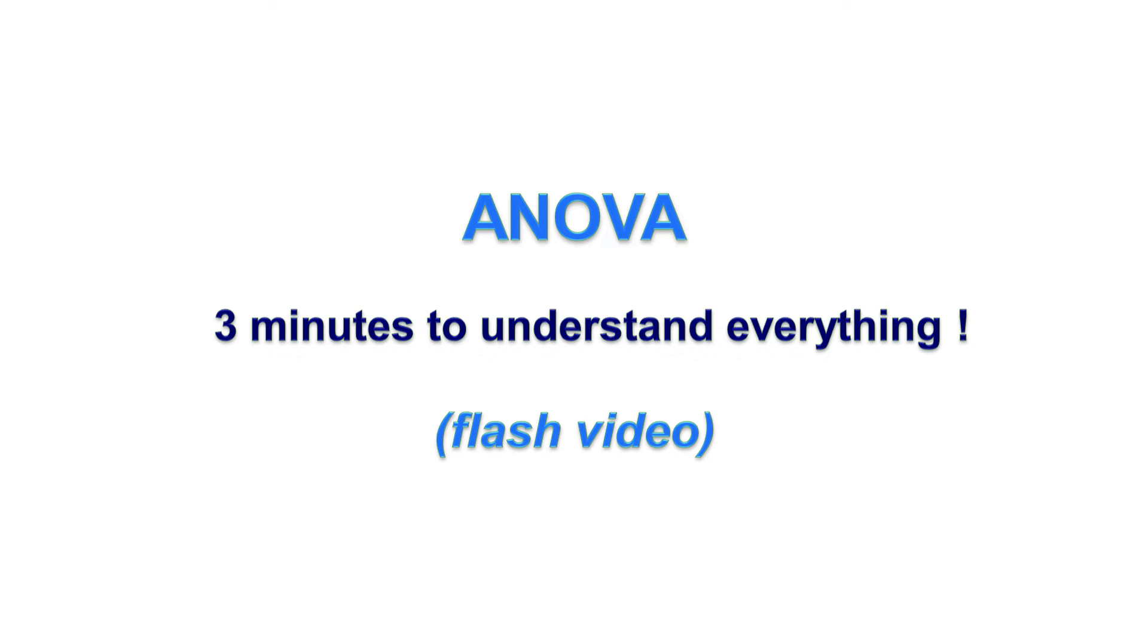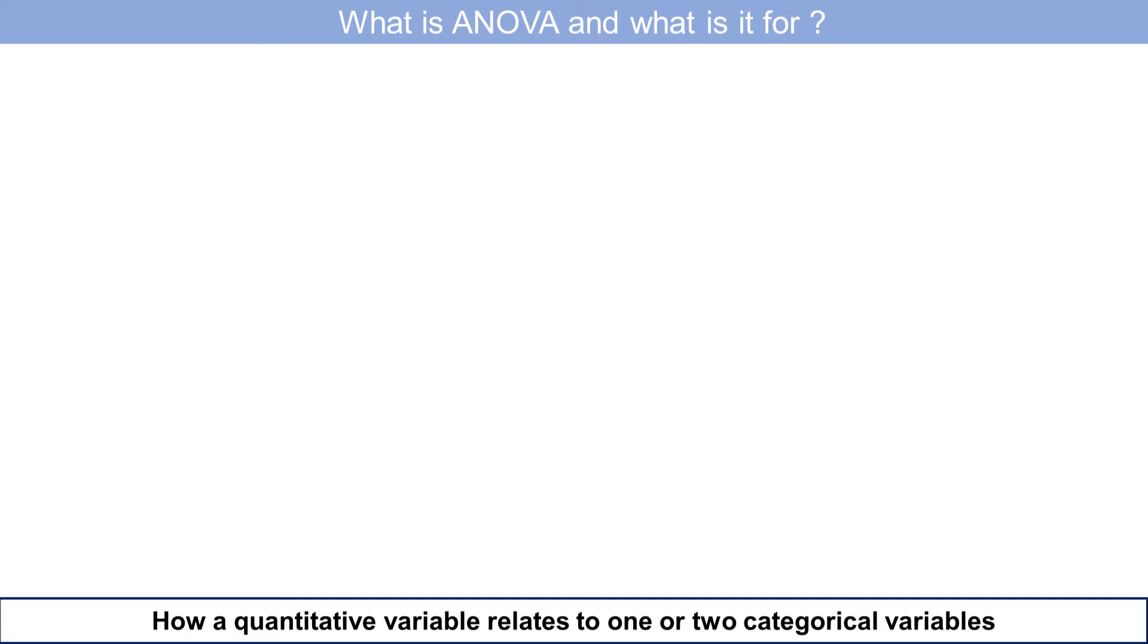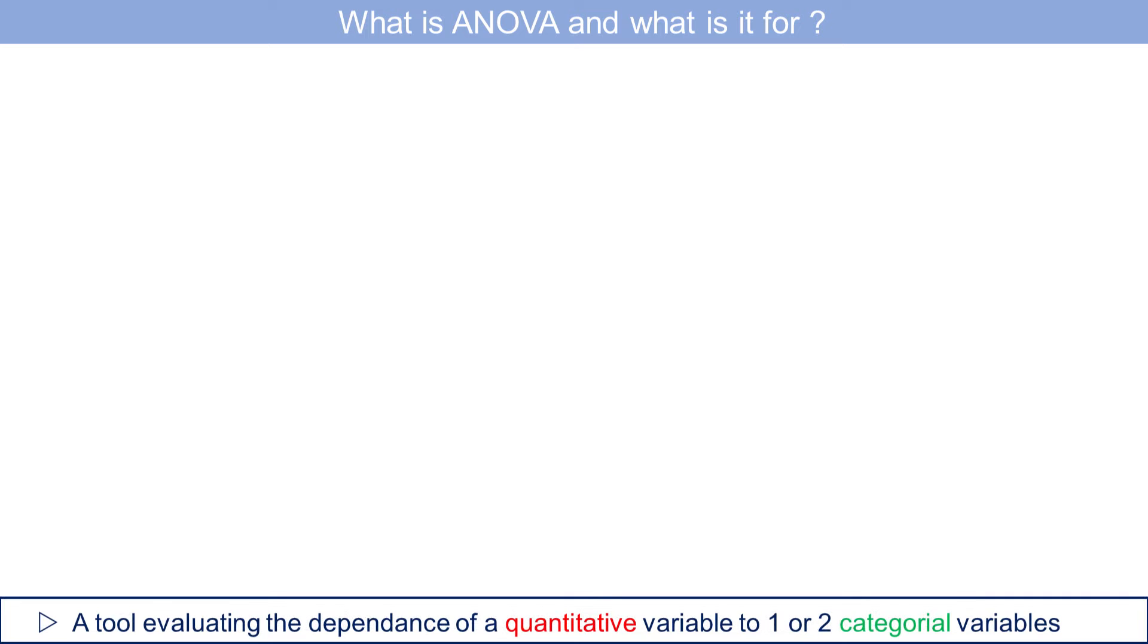This 3-minute video is the opportunity to give you a brief overview of ANOVA. ANOVA is a method of analysis that allows us to study the dependence of a continuous quantitative variable on one or two qualitative variables.